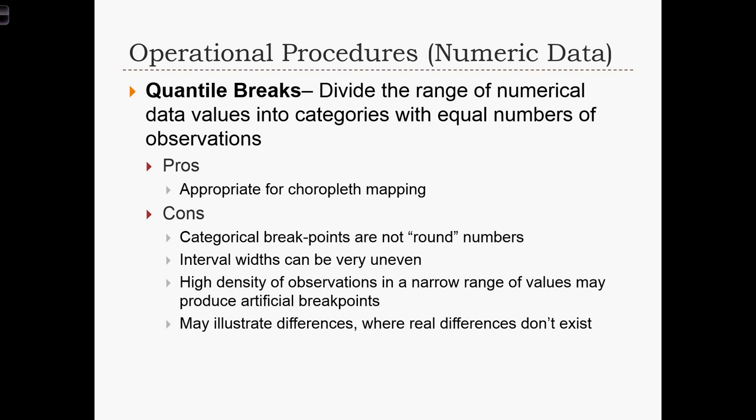But it does have some cons. The categorical breakpoints are not necessarily nice and round numbers. The widths can be very uneven. So while each category will have an equal number of observations, we might find that some of those categories have very narrow intervals, and some could be very large.